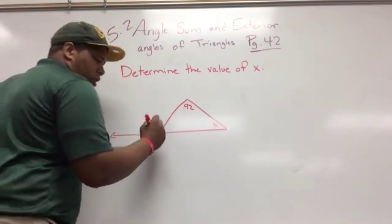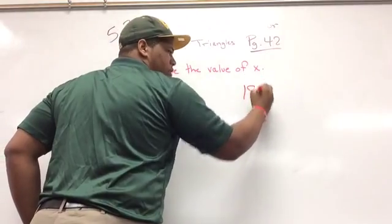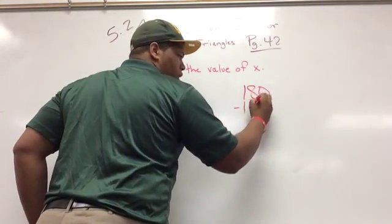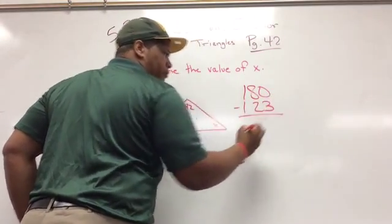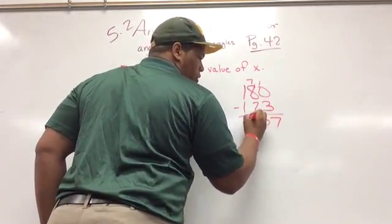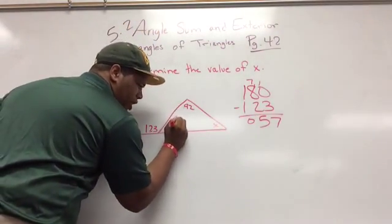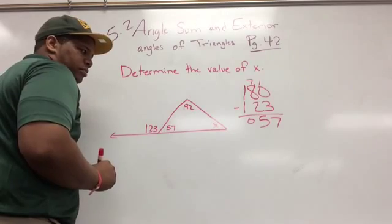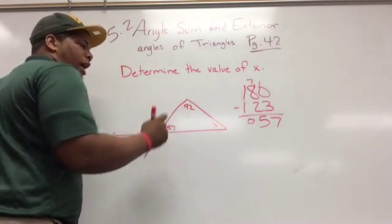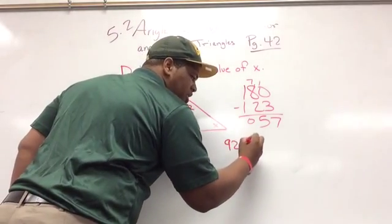So to figure this out, I would do 180 minus 123 and I would get 57. So I know this angle on the inside is 57. Now I can do 92 plus 57 plus x equals 180 to find my missing x.